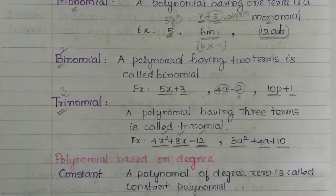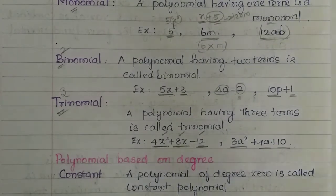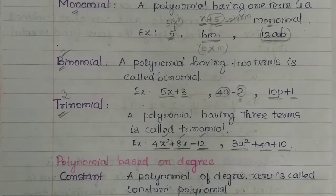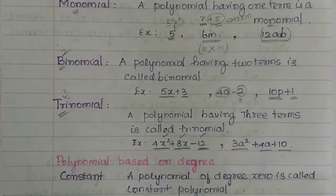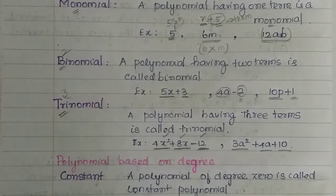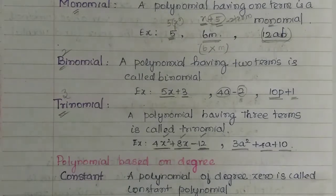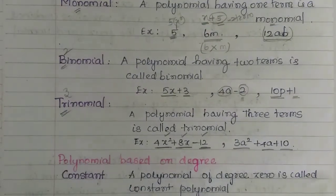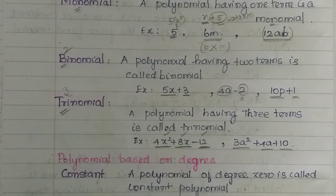What do you say for more than three terms? It is not given a specific name — it all comes under polynomial. One term is specific to monomial, two terms to binomial, three terms to trinomial, but 4, 5, 6 terms are common to polynomial.